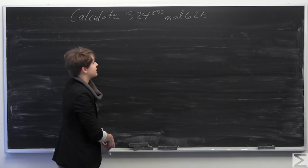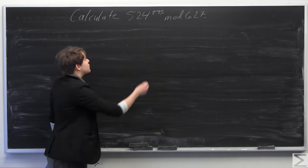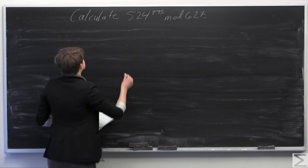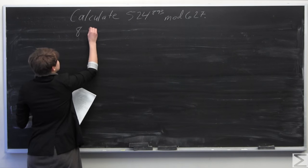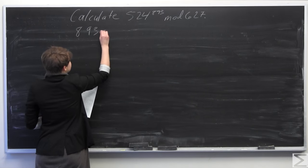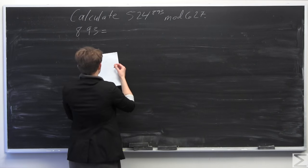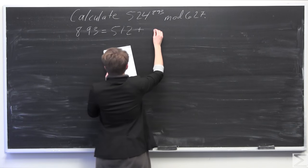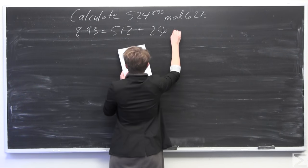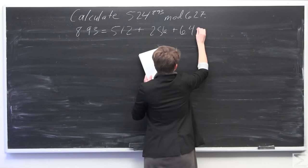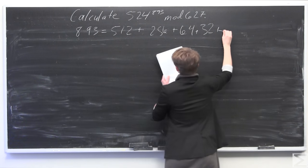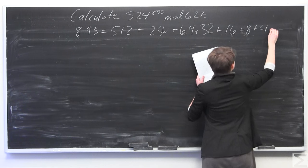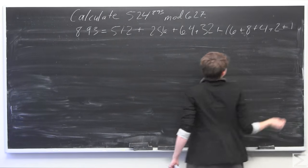So the way that we're going to start out doing this is we're going to take this exponent and we're going to write it as a sum of powers of 2. So we take the exponent, 893. So you can say this equals 512 plus 256 plus 64 plus 32 plus 16, 8, 4, 2, and 1.